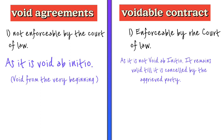On the other hand, a voidable contract is a contract which is valid when it is made, as it is not void from the very beginning, and it remains valid until it is cancelled by the aggrieved party.